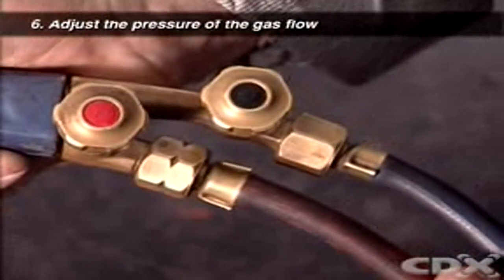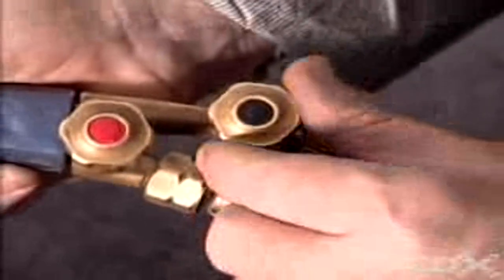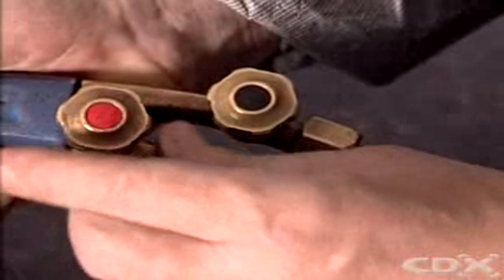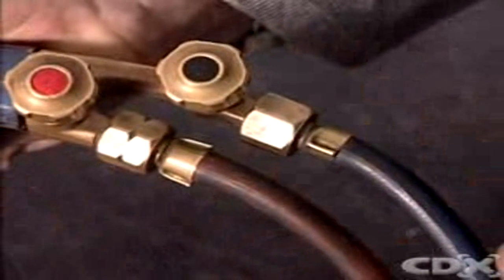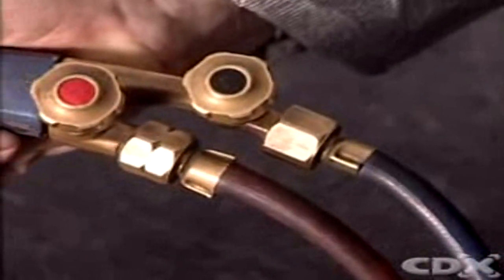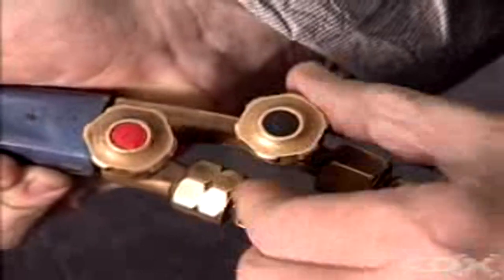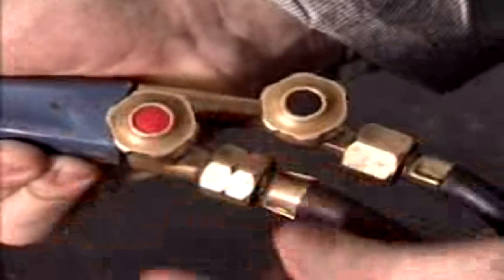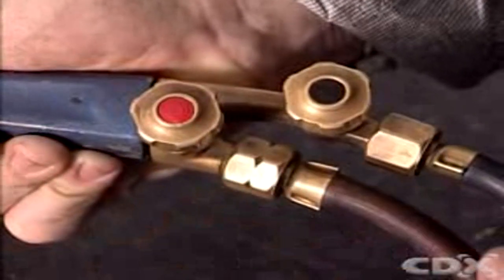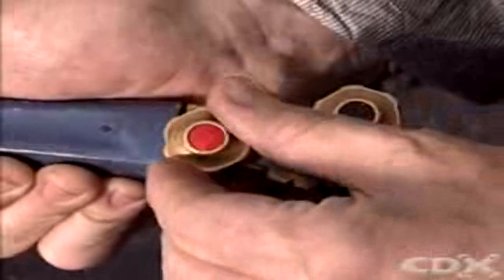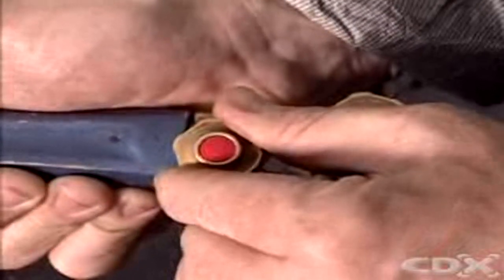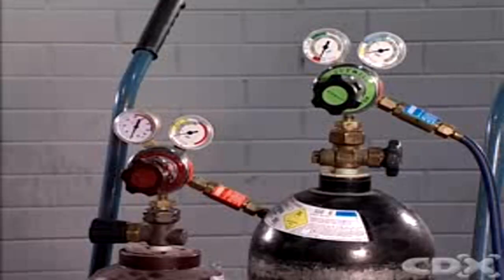You are now ready to adjust the gas pressure for heating. Look at the two valves on the torch handle. The valve next to the oxygen hose controls the flow of oxygen to the tip. Close it tightly clockwise. The valve next to the acetylene hose controls the flow of acetylene to the tip. Also close it tightly clockwise.